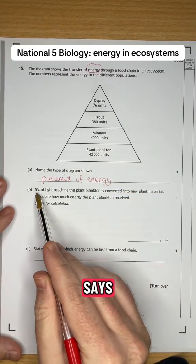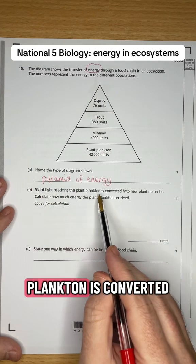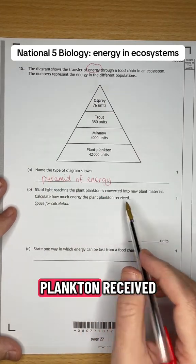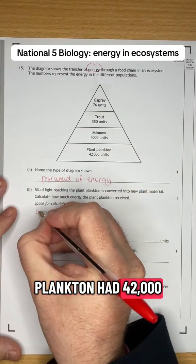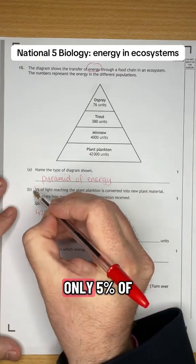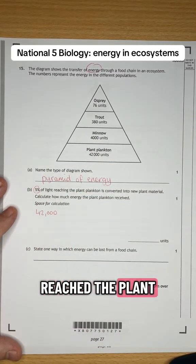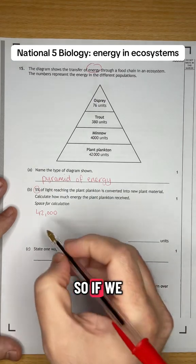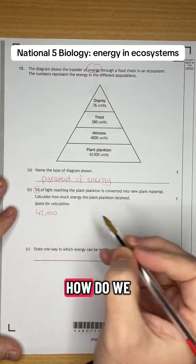Now part b says five percent of light reaching the plant plankton is converted into new material. Calculate how much energy the plant plankton received. So the plant plankton had 42,000 units in it, but it's telling us that was only five percent of the light that reached the plant. So therefore we have to work out what 100 percent is.